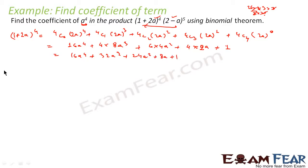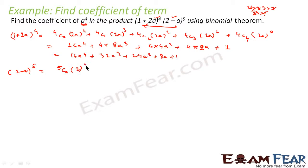Similarly, let us expand (2 minus a) to the power 5. Expanding this we get: 5C0·2⁵·(−a)⁰ + 5C1·2⁴·(−a)¹ + ...